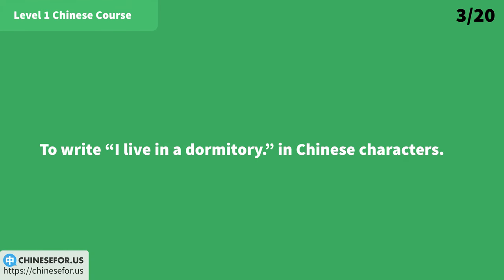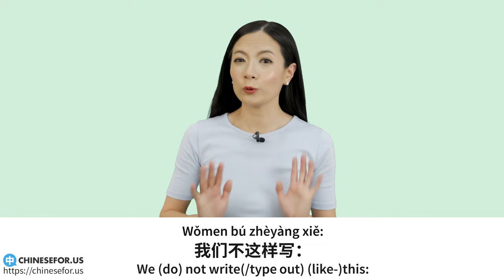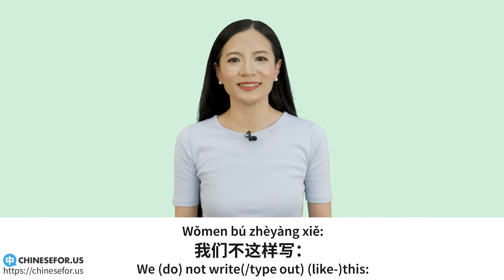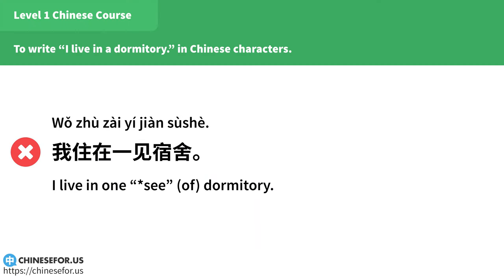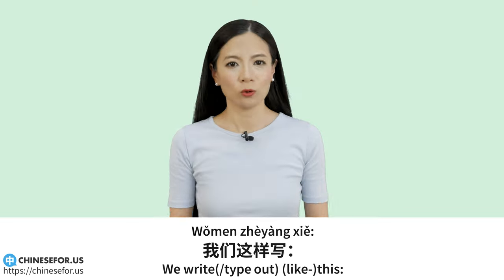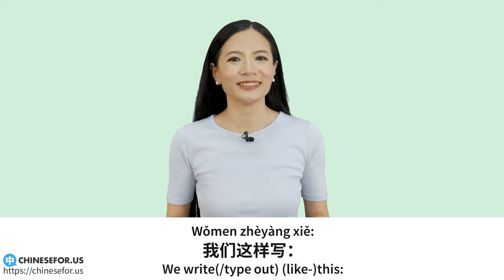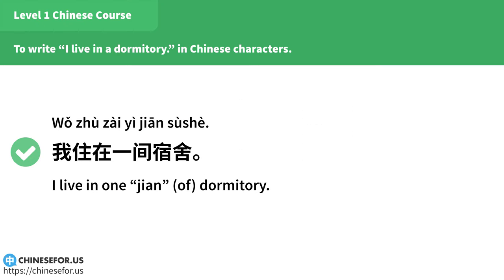To write "I live in a dormitory" in Chinese characters: 我们不这样写「我住在一间宿舍」（incorrect form），我们这样写「我住在一间宿舍」（correct form）。